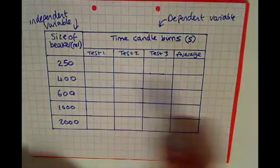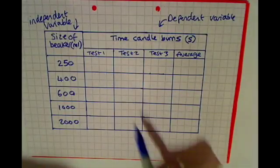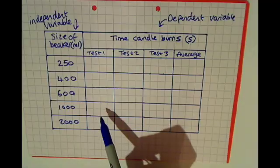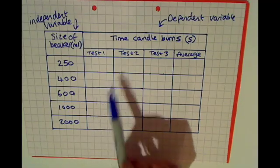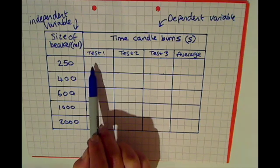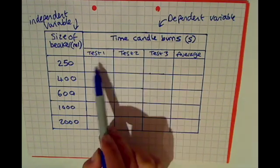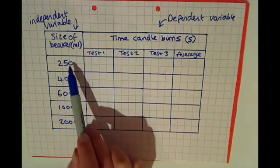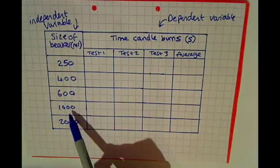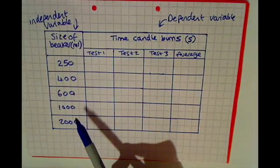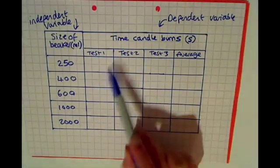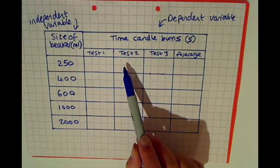So now if you continue the lines along like I've done here, you will have a box into which you can start recording your results when you take your experiment. So you do test one and you have a look in this case for the time the candle burns in 250 ml beaker, 400 ml beaker, 600 ml beaker, a thousand ml beaker and two thousand ml beaker, and you record your results in here. You then repeat your experiment and record your results in here.